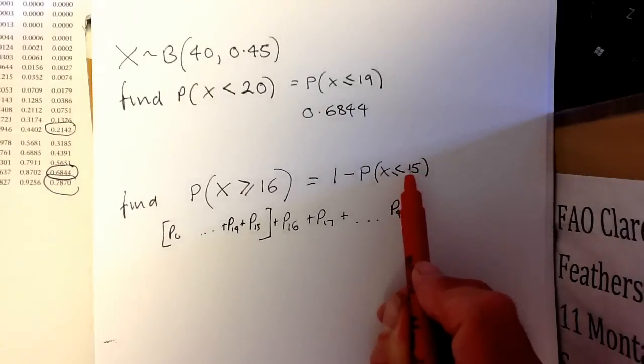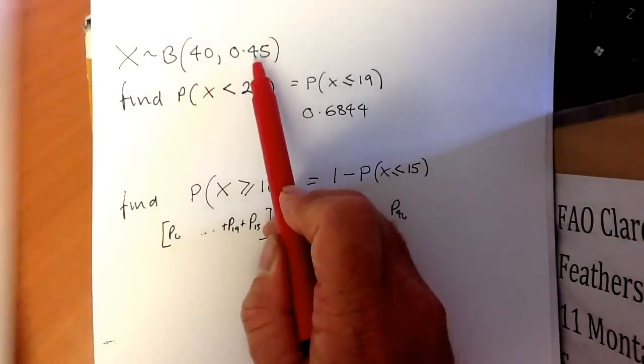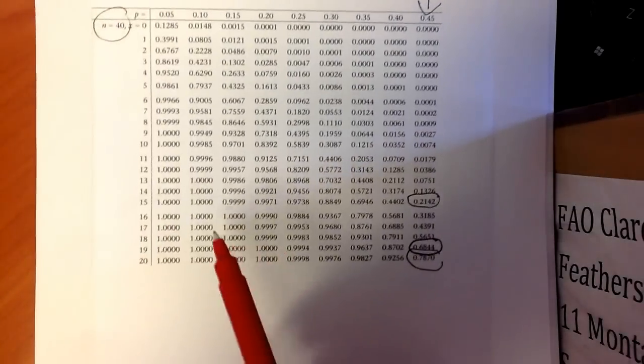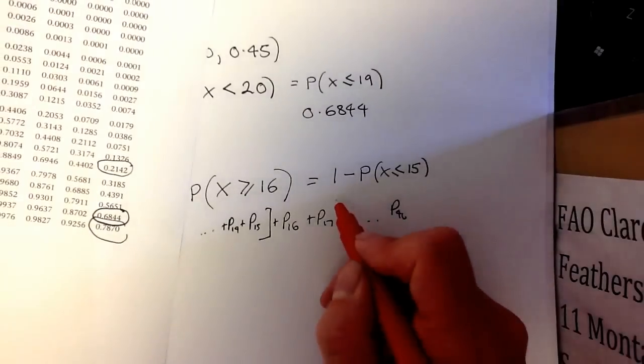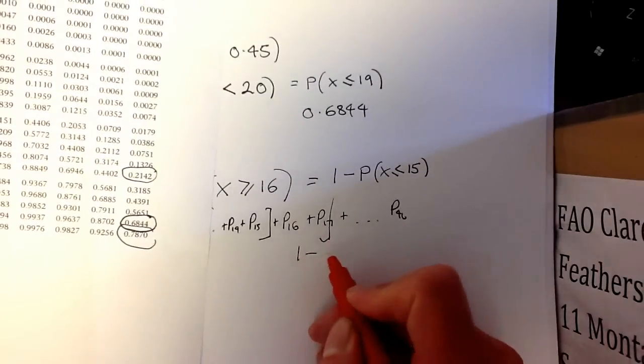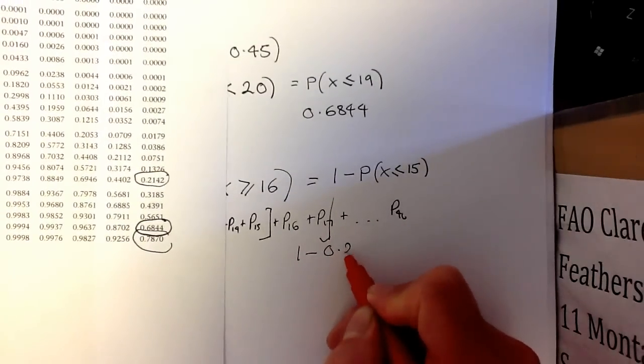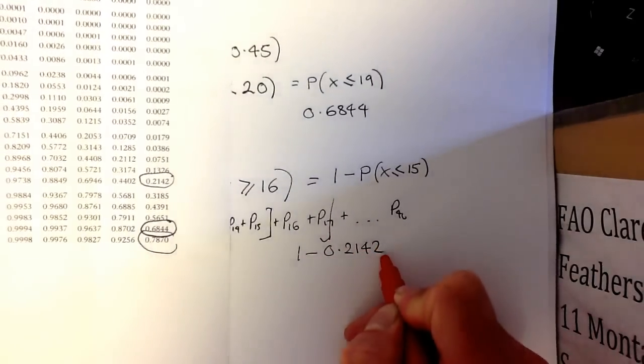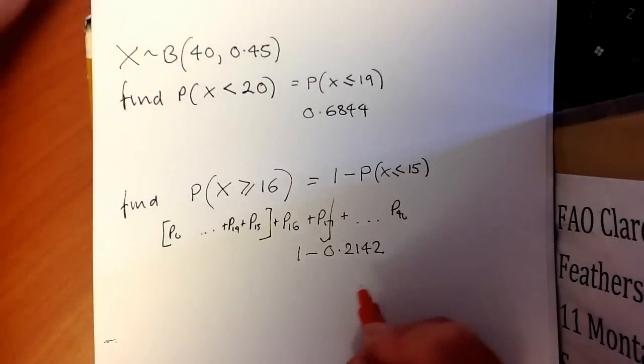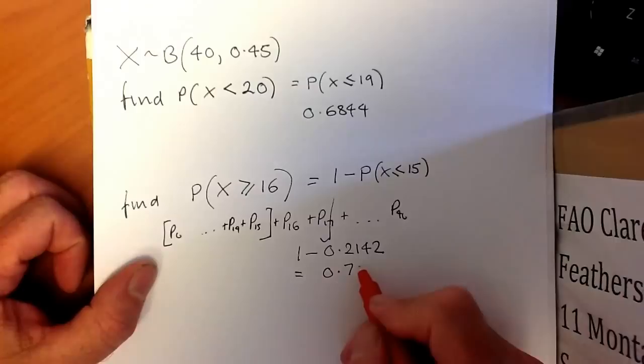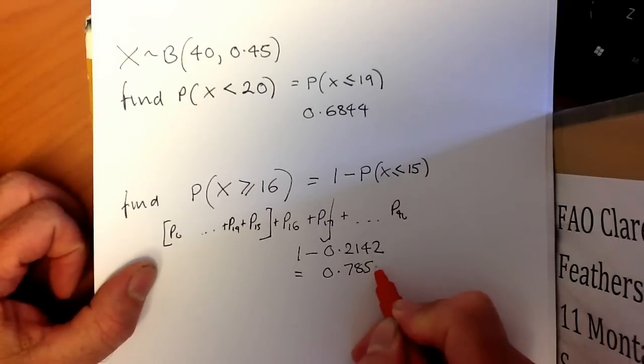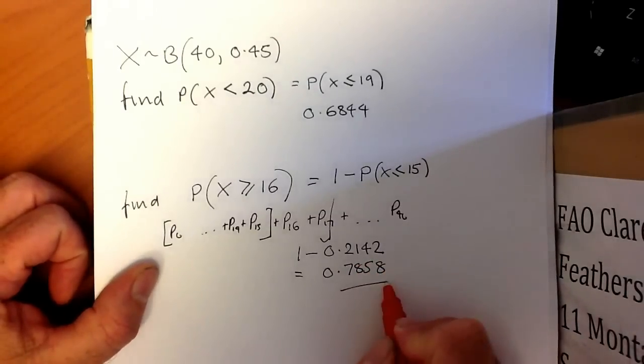If I look up 15 with n equals 40 and p equals 0.45, I come across to 15 and get 0.2142. So the answer will be 1 minus 0.2142, which equals 0.7858.